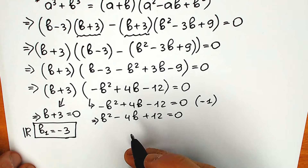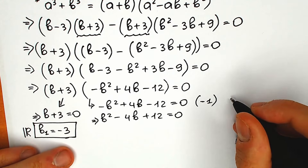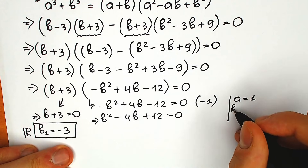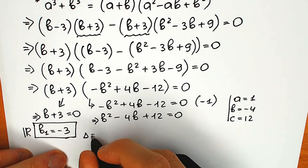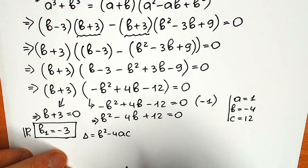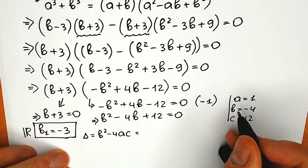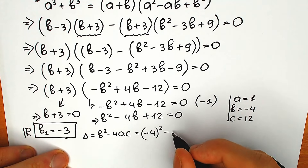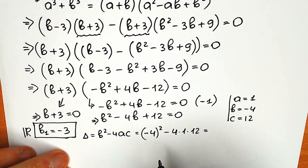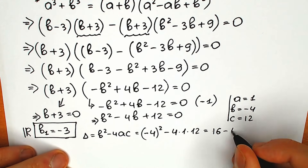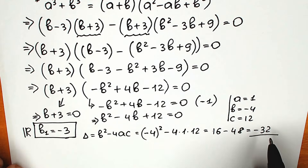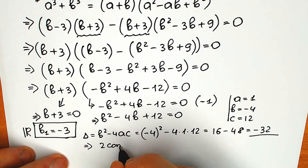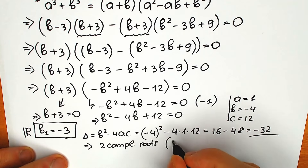For the second quadratic equation, we can solve it with the standard method using coefficients: a equals 1, b equals minus 4, and c equals 12. The discriminant is D equals b squared minus 4ac. Plugging in: (minus 4) squared minus 4 times 1 times 12 equals 16 minus 48 equals minus 32. Our discriminant is negative, which means from this branch we get two complex roots.